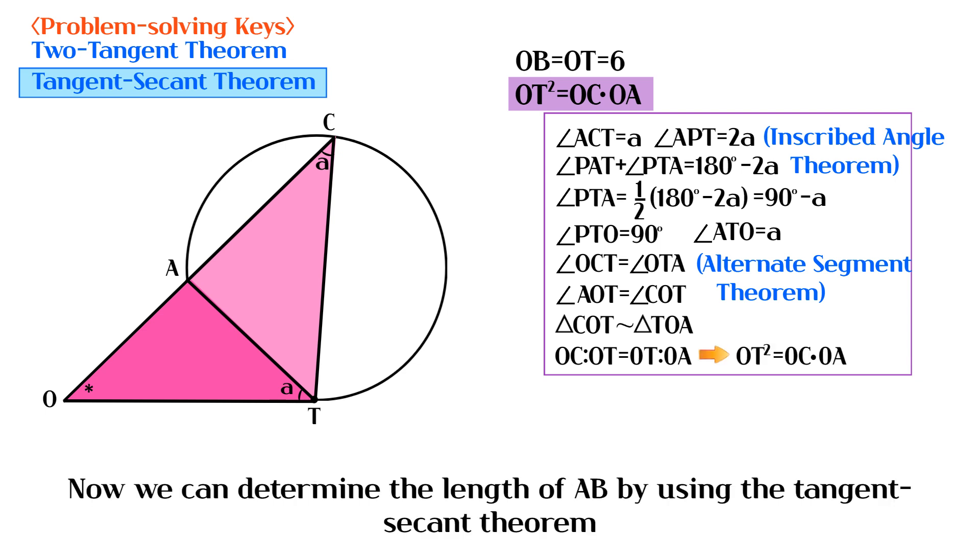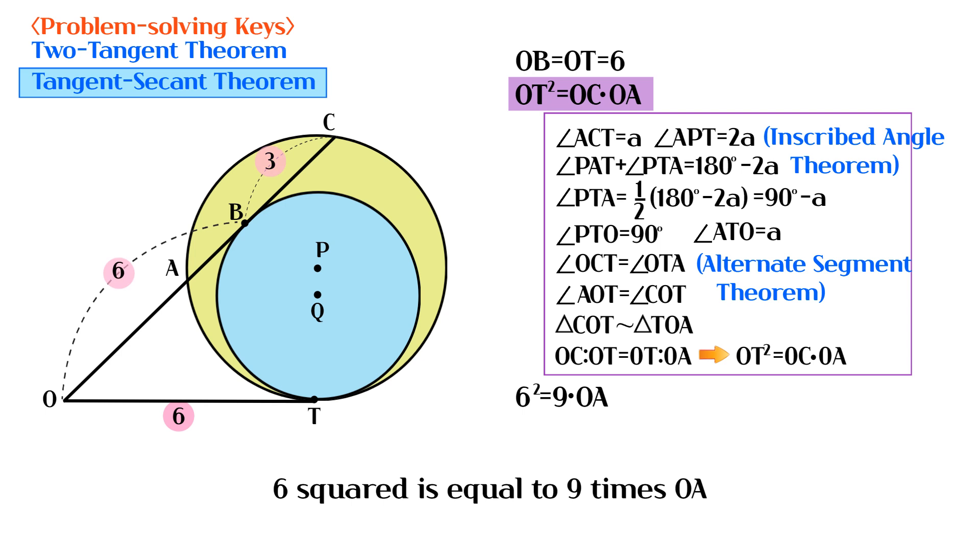Now we can determine the length of AB by using the tangent secant theorem. 6 squared is equal to 9 times OA.